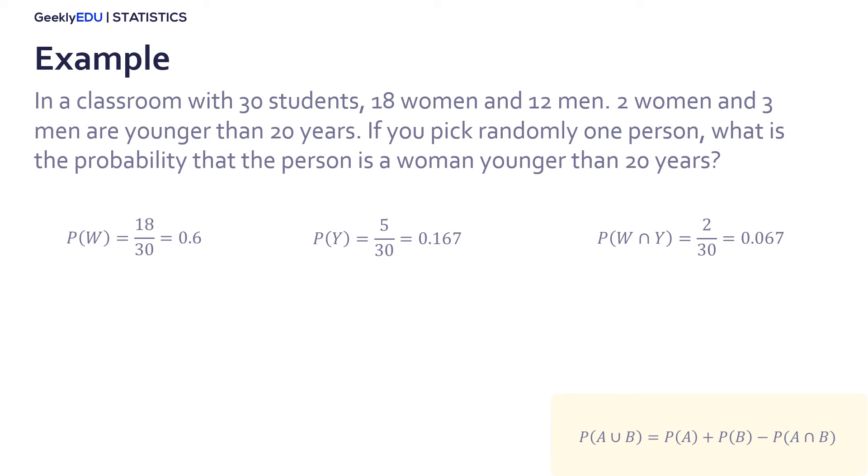Using the formula, we only need to substitute the information and compute the result. And the probability of picking a woman under 20 is 0.7.